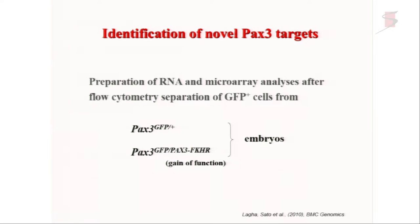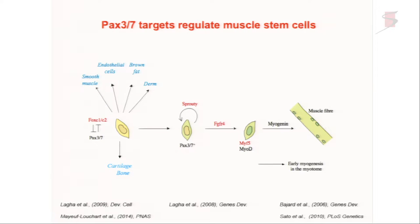Very little was known about the targets of Pax3. A number of years ago we set up a screen to look at Pax3 targets in the embryo. We made an allele of Pax3 expressing GFP so we could FACS-sort the cells that interested us. Then we made a gain-of-function allele with the Pax3 DNA binding domain attached to a powerful transcriptional activation domain — this gain-of-function allele actually saves the mutant phenotype. We looked at Pax3-positive progenitors in the somite at different stages. We verified these were direct targets by transgenic analysis in the embryo and all appropriate manipulations. Myf5, the first of the myogenic regulatory factors, is a direct Pax3 target; most of its enhancers are directly regulated by Pax3, and it has many enhancers according to the site of skeletal muscle formation.